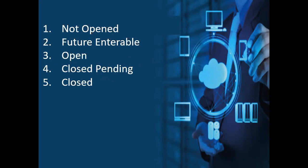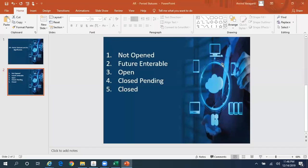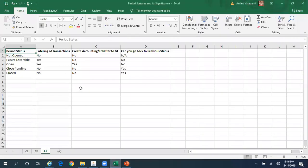Let me explain in detail the significance of these period statuses and what kind of transactions can be entered when a period falls in any of these statuses. The first status is 'Not Opened.' When a period is in Not Open status, obviously you will not be able to enter any kind of transaction, whether it's creation of an invoice, creation of a receipt, or creation of a receipt reversal.